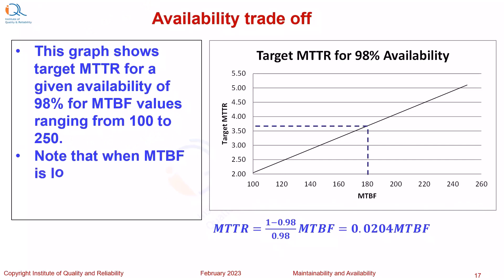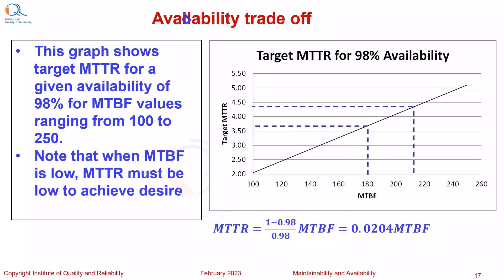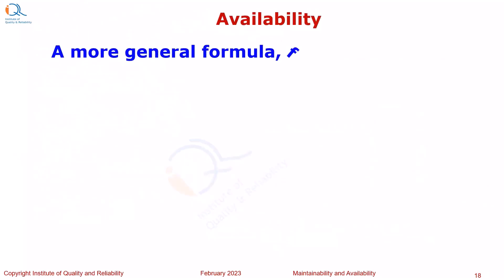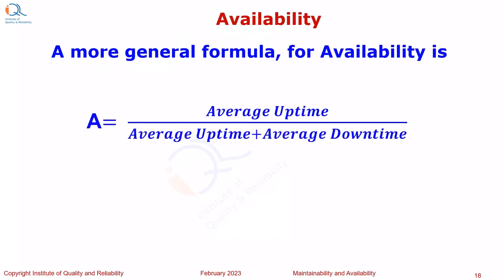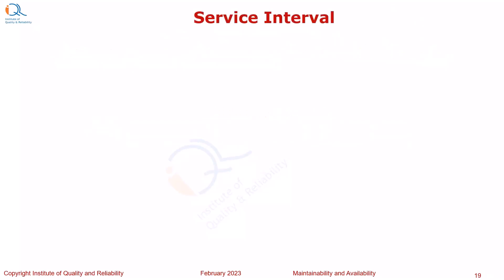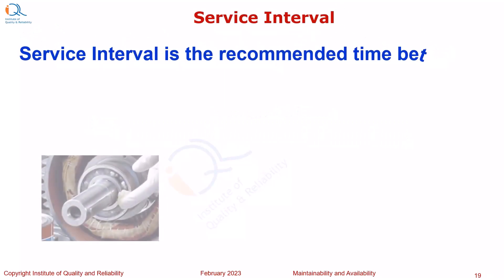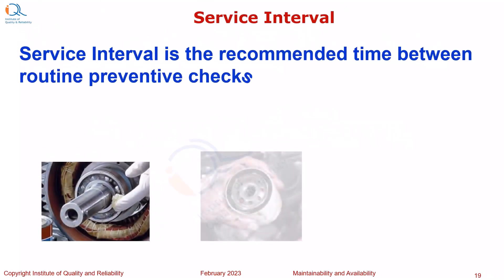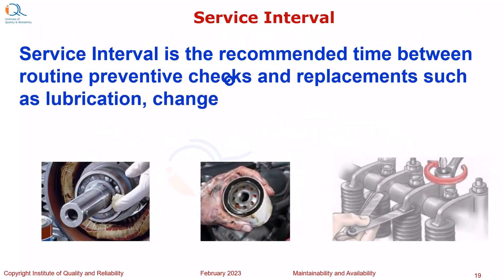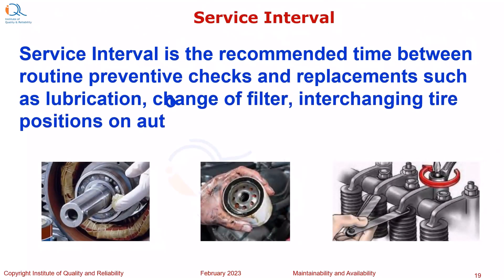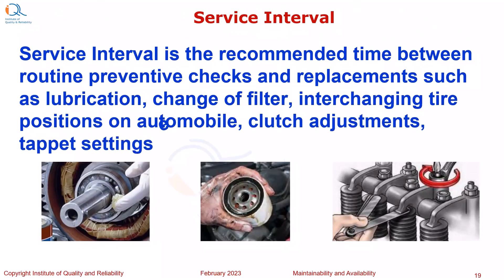Note that when MTBF is low, MTTR must also be low to achieve the desired availability. A more general formula for availability can be given as average uptime divided by average uptime plus average downtime. Service interval is the recommended time between routine preventive checks and replacements, such as lubrication, change of filter, interchanging tire positions of an automobile, clutch adjustments, tappet settings, and so on.